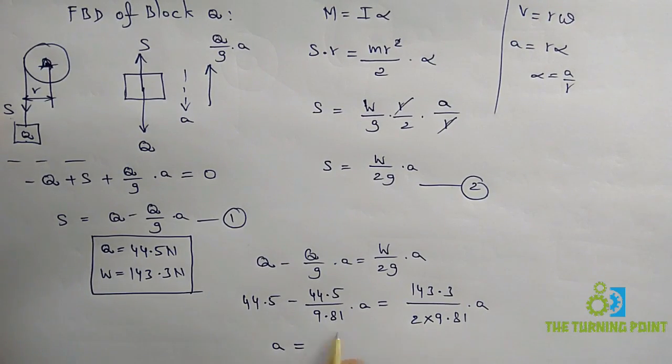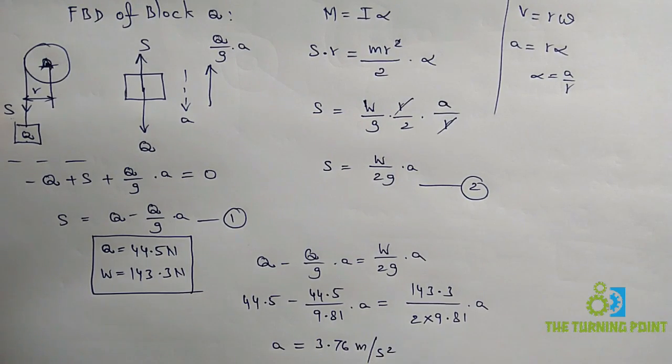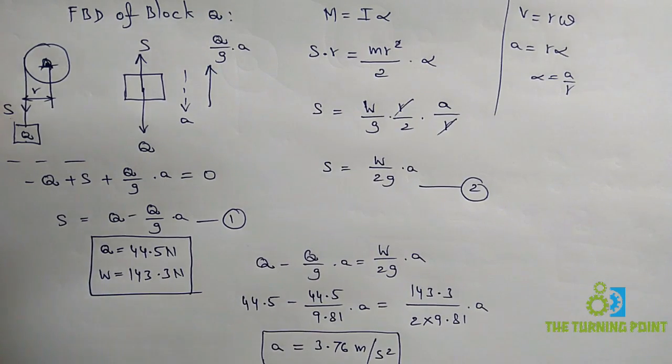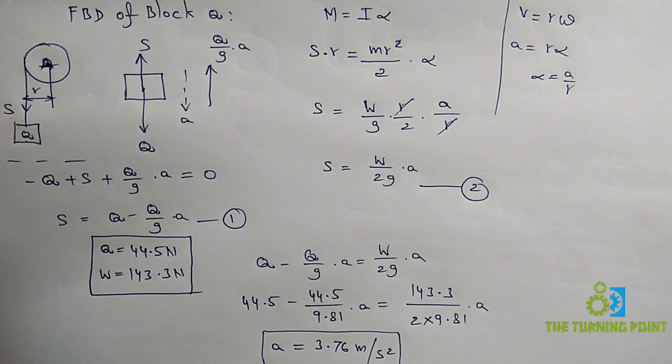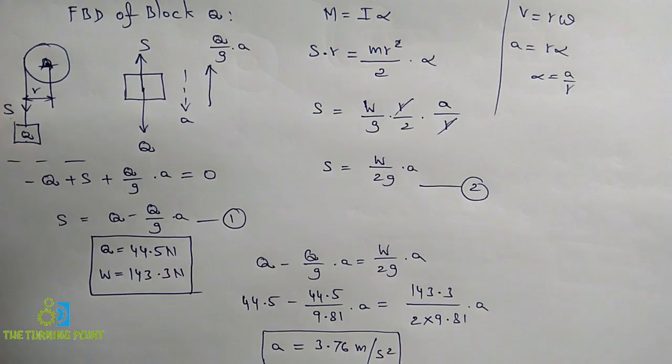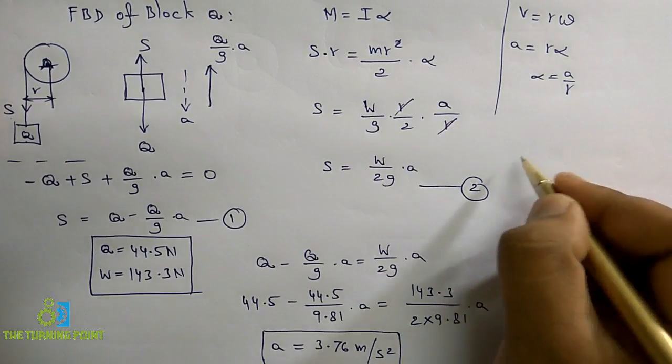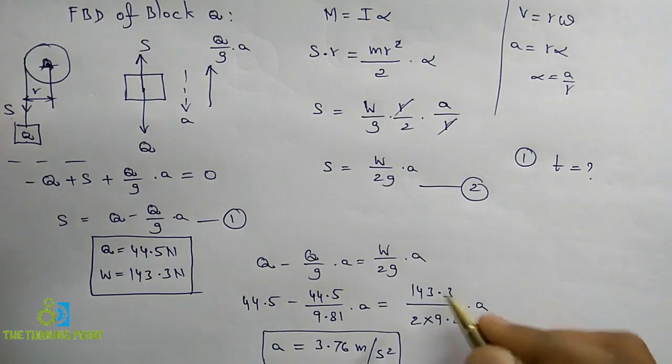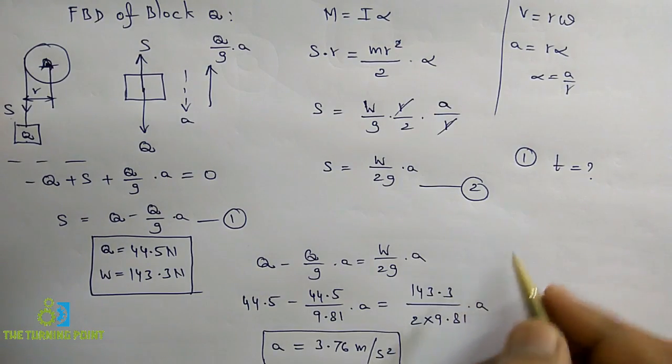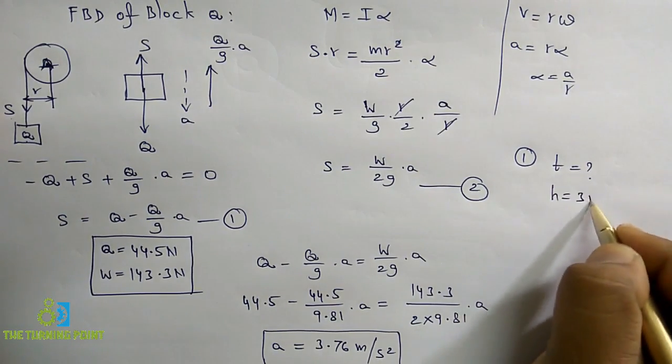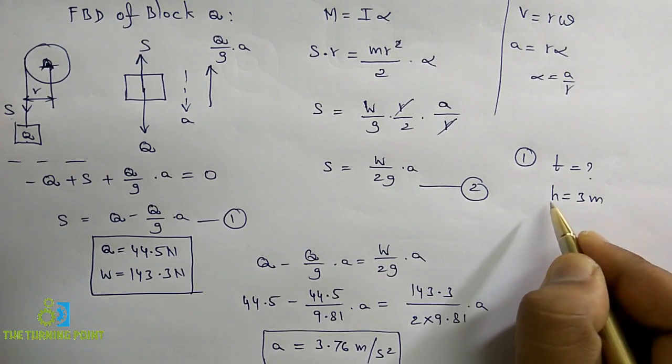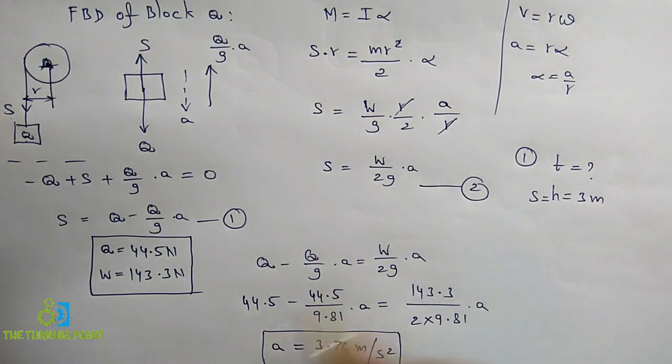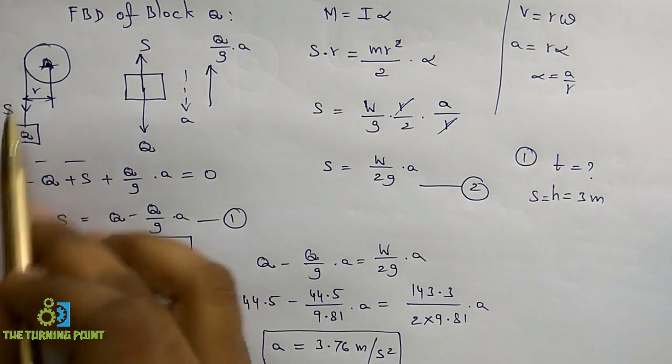Simplify this equation and find the acceleration value. When you calculate it, you will get 3.76 meters per second squared. This is the linear acceleration. Now you read the first bit: find the time T required to fall through a height h=3 meters. So h is nothing but height, you can consider that one as displacement. When this is released from rest, initial velocity U equals zero.